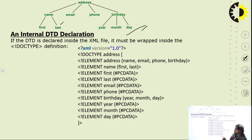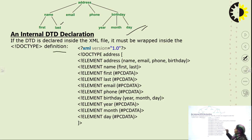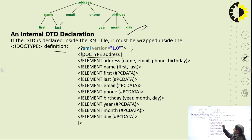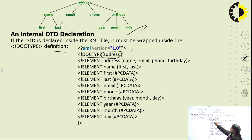When the DTD is declared inside the XML file, it must be wrapped inside the DOCTYPE definition, which is the first line of your code. The first line states that we are using XML version 1. When writing an internal DTD declaration, first you write DOCTYPE and after that you write the root node of the tree — here the root node is 'address'.